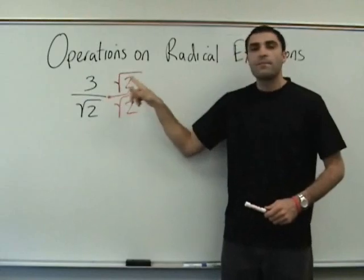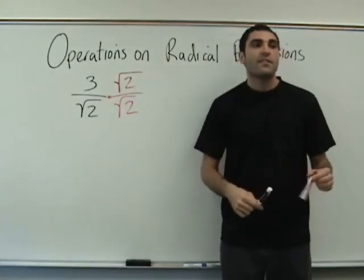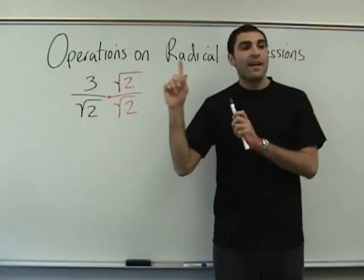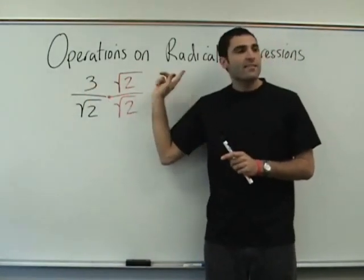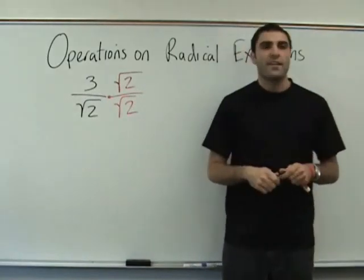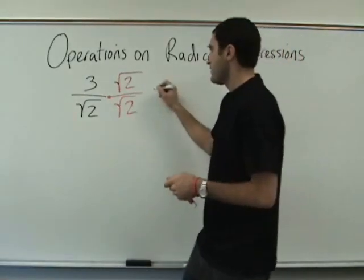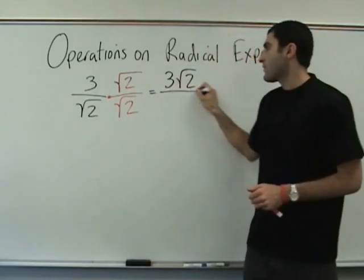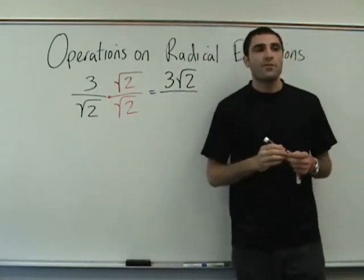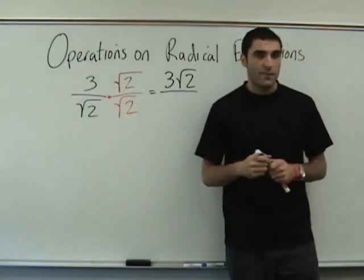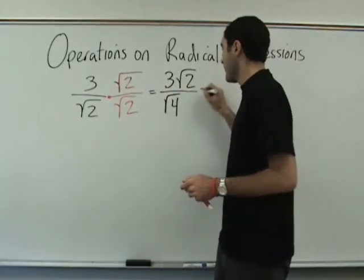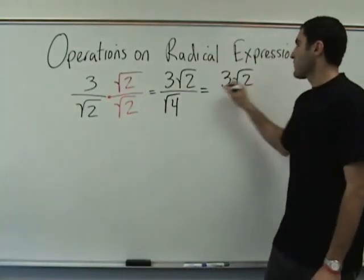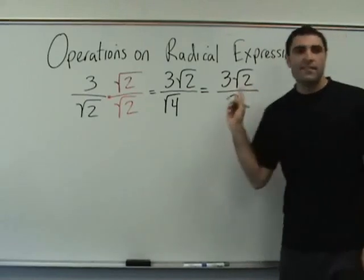So what is three times the square root of two? Square root of six is a common thing that people say, but we can't multiply inside and outside square roots — we can't combine. So it would be three square root of two. Three times the square root of two. Over — what is the square root of two times the square root of two? Square root of four. What is the square root of four? Two. That's the answer.